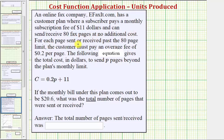For each page sent or received past the 80 page limit, the customer must pay an overage fee of $0.2 or 20 cents per page. The following equation gives the total cost in dollars to send p-pages beyond the plan's monthly limit.